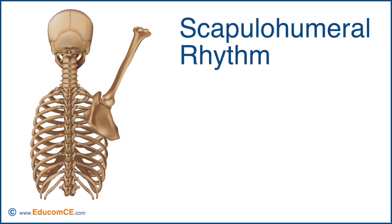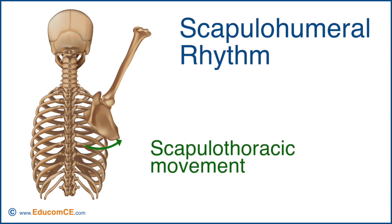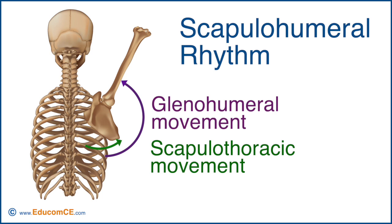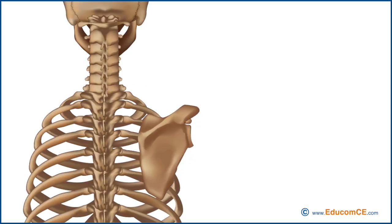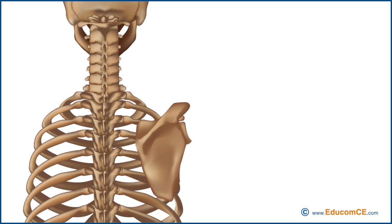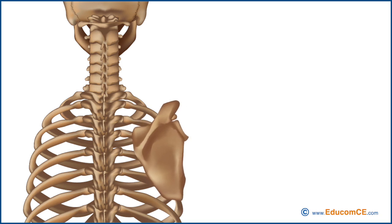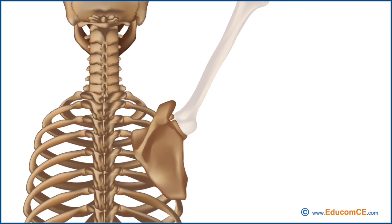Scapulohumeral rhythm is the coordinated movement of the scapula across the thoracic cage, called scapulothoracic movement, together with the movement of the humerus to the glenoid, or glenohumeral movement. Correct scapulohumeral rhythm is required to achieve full upper limb elevation. The scapula's superior rotation upon the thorax tilts the glenoid fossa upward, accentuating the movement occurring at the glenohumeral joint. This coordinated movement occurs in a predictable fashion, and any disturbance to this pattern is evidence of a muscular or joint dysfunction.